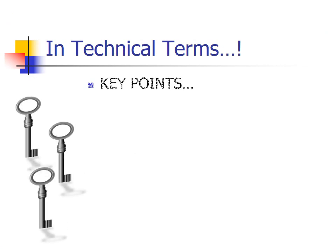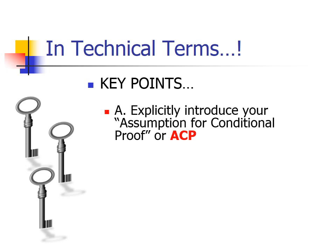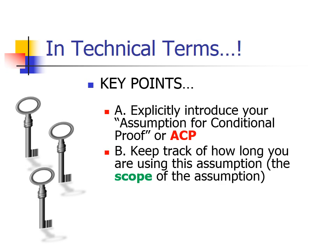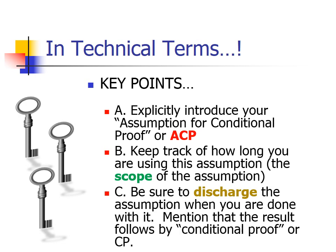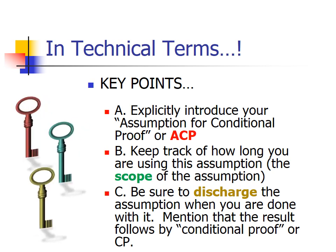In more technical terms: you need to explicitly introduce your assumption for conditional proof. Once you've done that, keep track of how long you're using that assumption — that is called the scope of the assumption. Then, when you're done using the original assumption, discharge it and mention that the horseshoe claim you finally reached follows by conditional proof, or CP for short. If you remember these three points, you've pretty well mastered the idea of conditional proof. It lets you reach horseshoes quickly and efficiently in ways that would otherwise be long and tedious.